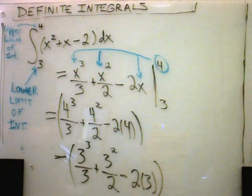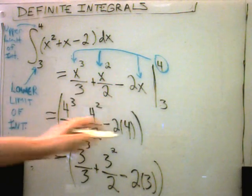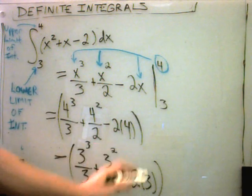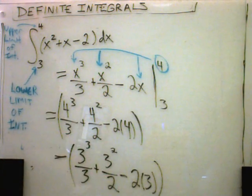And we could simplify this down. You could definitely simplify everything down in the parentheses in the first part, simplify everything down in the parentheses in the second part, take that number minus the new number, and that will be your solution.